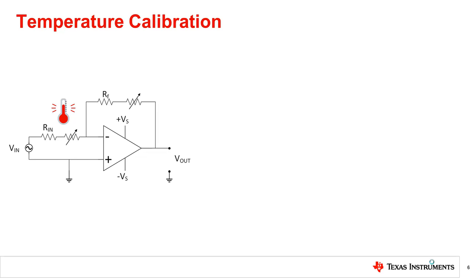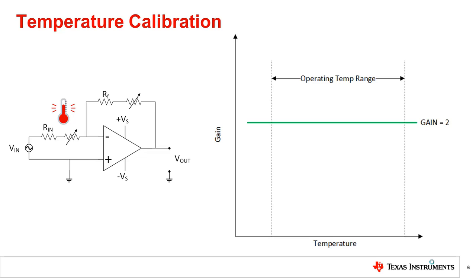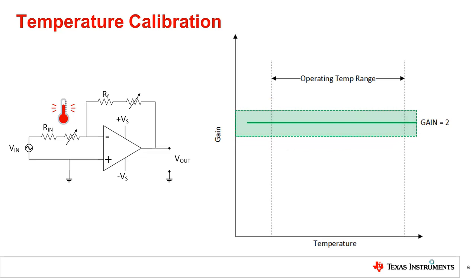Having seen what temperature compensation is, we will now introduce temperature calibration and how it is used to perform compensation for a given circuit. All components have some degree of temperature error introduced due to ambient temperature changes or due to self-heating effects. For this example, we will again take the inverting amplifier circuit. The x-axis represents the temperature, the y-axis represents the gain, and the green line represents the ideal gain of 2, which we would like the circuit to have across the operating temperature range. The red box around the ideal gain represents the gain error due to the change of component values — in this case, the resistors — due to temperature. The intent is to reduce the gain error by means of compensation to an acceptable limit, as shown by the green box. This is achieved by calibration. There are different types of calibration methods used based on the type of error that needs to be compensated, which we will introduce next.